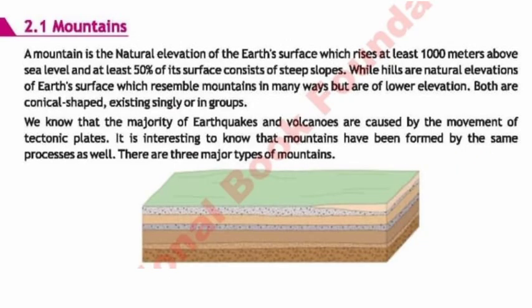Mountains: A mountain is a natural elevation of the Earth's surface which rises at least one thousand meters above sea level, and at least fifty percent of its surface consists of steep slopes. Hills are natural elevations of Earth's surface which resemble mountains in many ways but are of lower elevation. Both are conical shaped, existing singly or in groups.